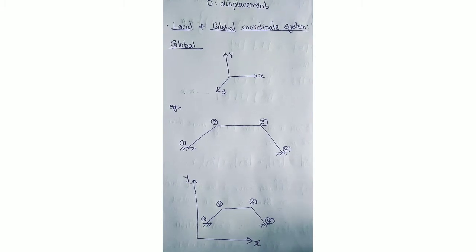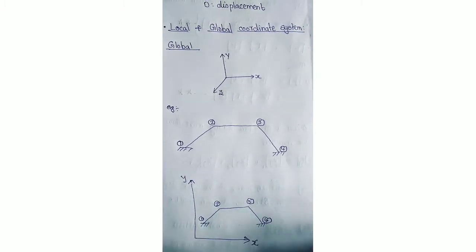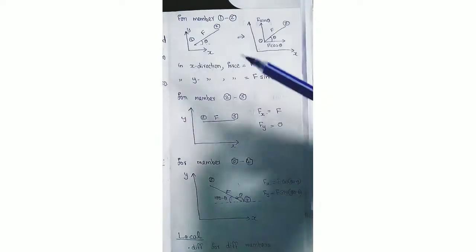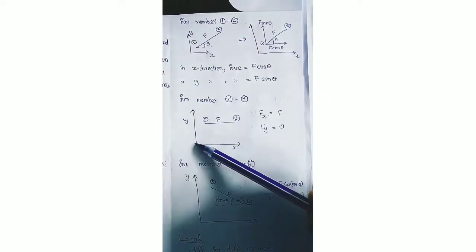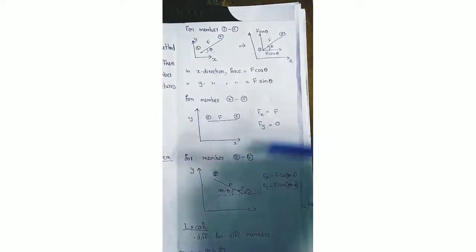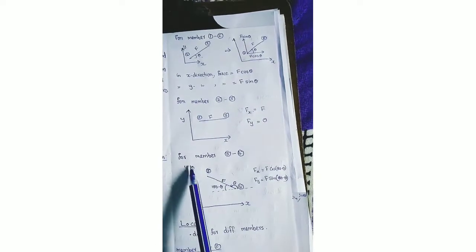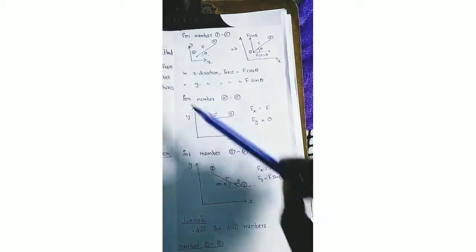In the global coordinate system, the x-y coordinates — also called Cartesian coordinates — are fixed and do not depend on the position or inclination of individual members. The two directions x and y are always mutually perpendicular axes and always fixed irrespective of the inclination of a member. For members 1-2, 2-3, and 3-4, the position of x-y is fixed.